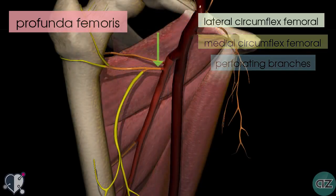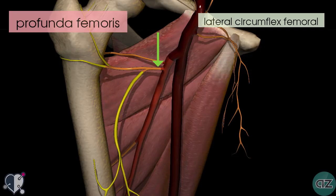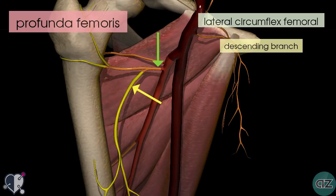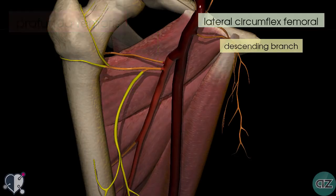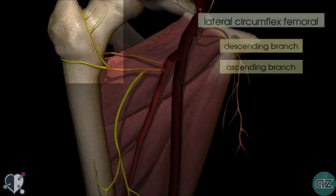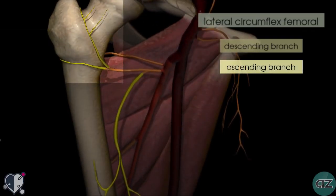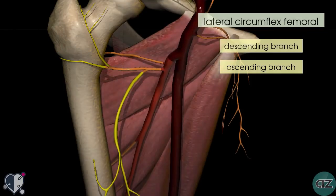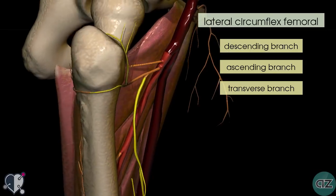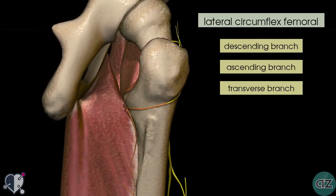The lateral circumflex artery has three branches. The first is the descending branch. Coming up to the shaft of the femur there are two further branches: one ascends up onto the neck of the femur, and the other is the transverse branch, which winds around laterally around the proximal shaft of the femur.